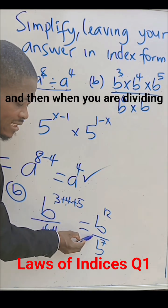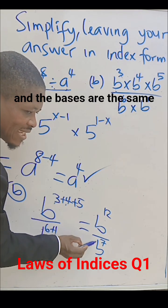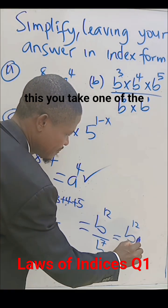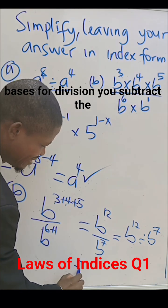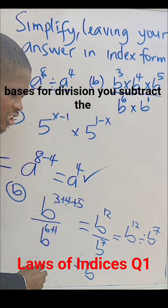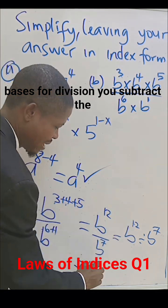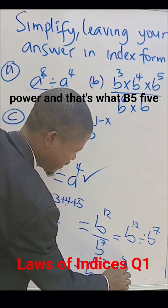When you are dividing and the bases are the same, you take one of the bases. For division, you subtract the power. And that's what? B to power 5.